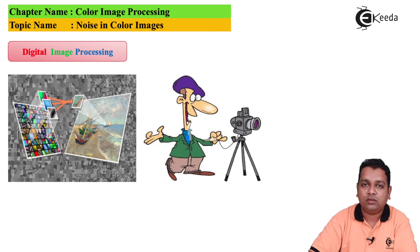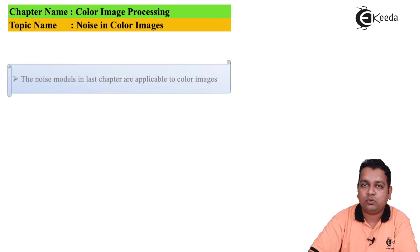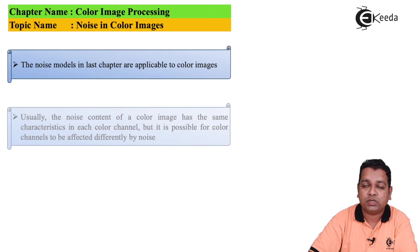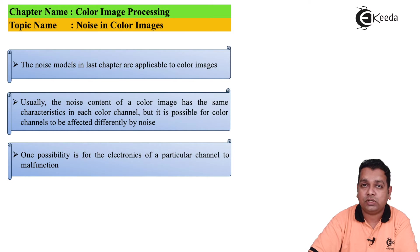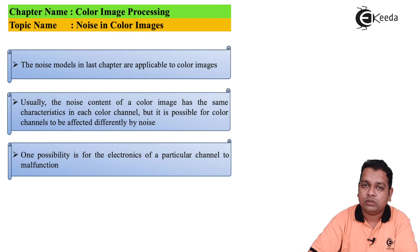We begin with the topic: noise in color images. The noise models that we have seen in image restoration are applicable to color images also. We have seen the noise model of Gaussian type, uniform noise, and exponential noise. Those six models along with the periodicity in noise have been covered.